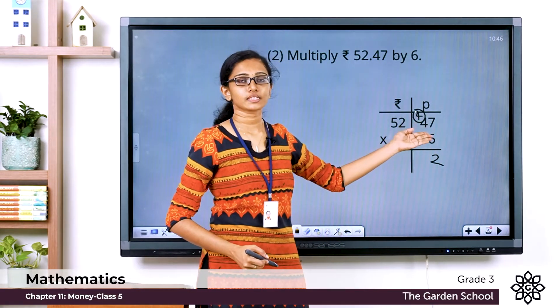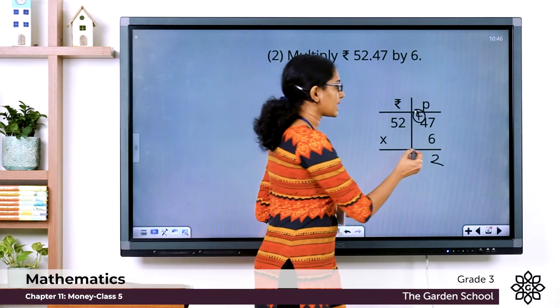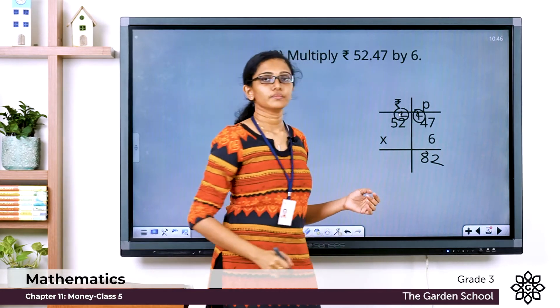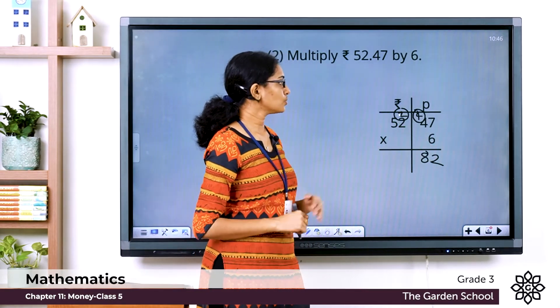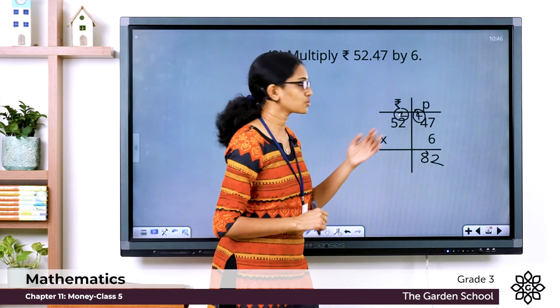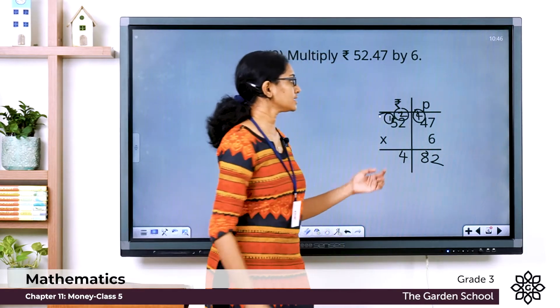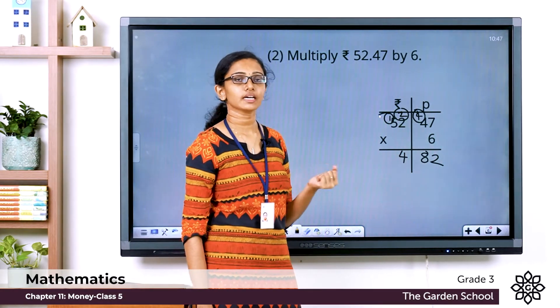In the rupee column now we have 6 into 2, 12 plus this 2, 14. So let's write 4 here, carry over 1 to the next place. Now we have 6 into 5, 30 plus 1, 31.